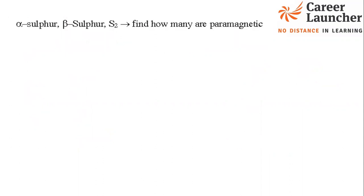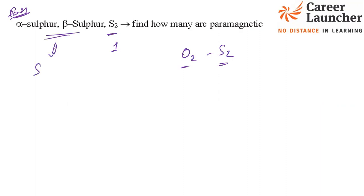Easy question: among alpha-sulfur, beta-sulfur, and S2, how many are paramagnetic? S2, like O2, has unpaired electrons in its MO diagram and is paramagnetic. Alpha-sulfur and beta-sulfur are both S8 with a crown structure and are diamagnetic. So only one species is paramagnetic. The answer is 1.